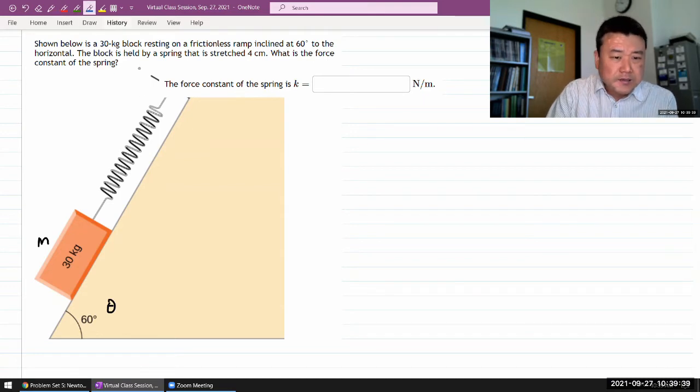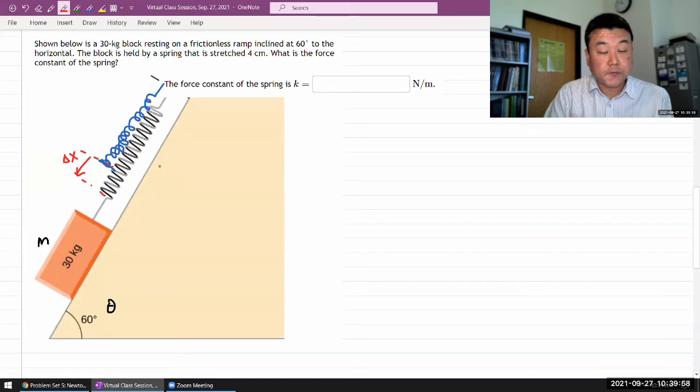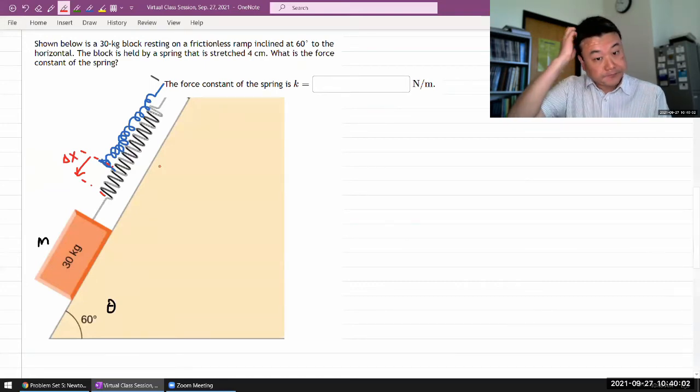The block is held by a string that is stretched four centimeters. If the string was at equilibrium length, it would be something like this. The question describes how at this position the string has stretched by some distance delta x. What is the force constant of the spring?